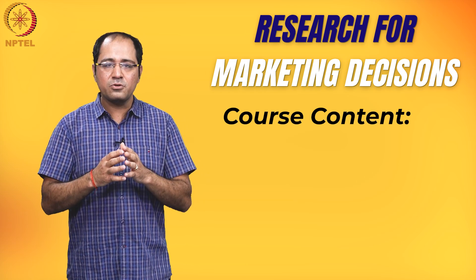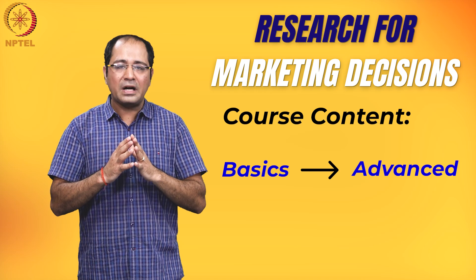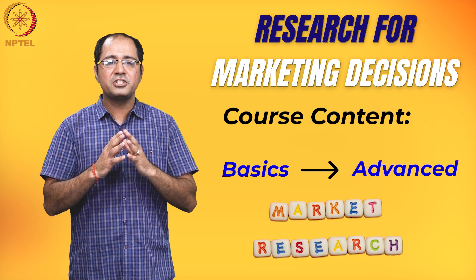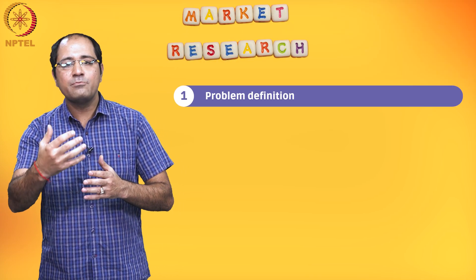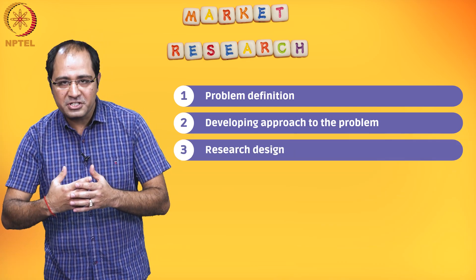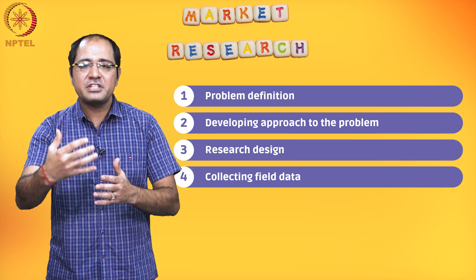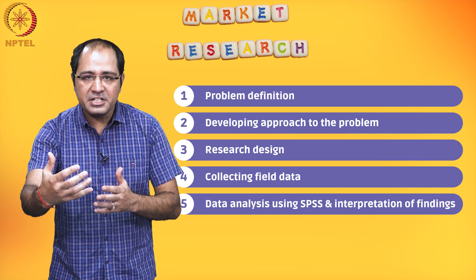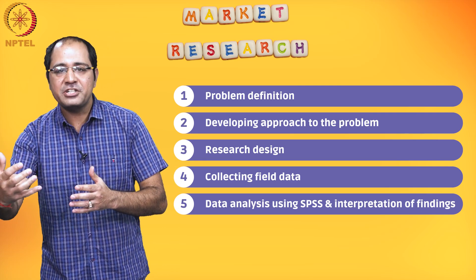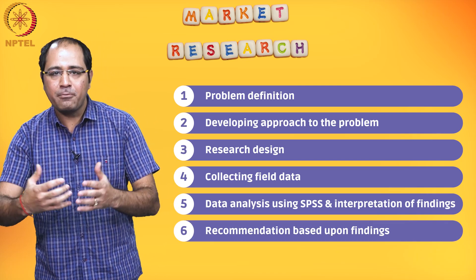What is the content of this course? We will start from the basics to some level of advanced thinking about market research. We'll start with step one of the market research process, which involves problem definition. Then we'll move on to developing an approach to the problem, which is step two. The third step is research design. The fourth step is collecting field data. The fifth step is doing data analysis using SPSS software and interpretation of findings. The last step is giving recommendations based upon our findings.